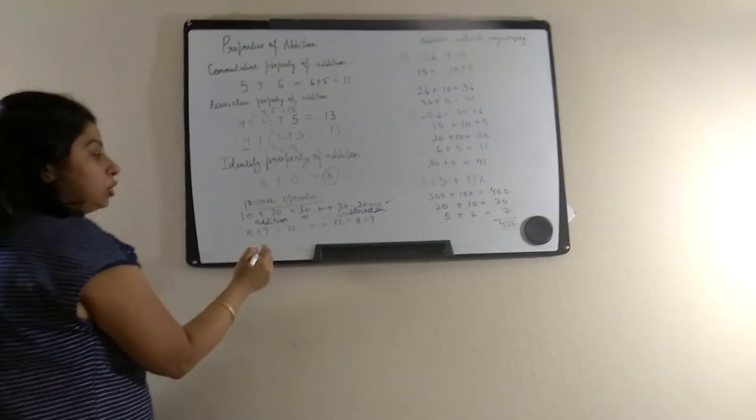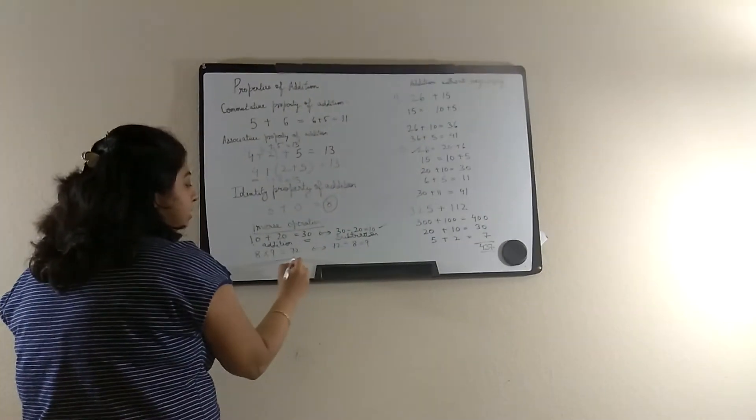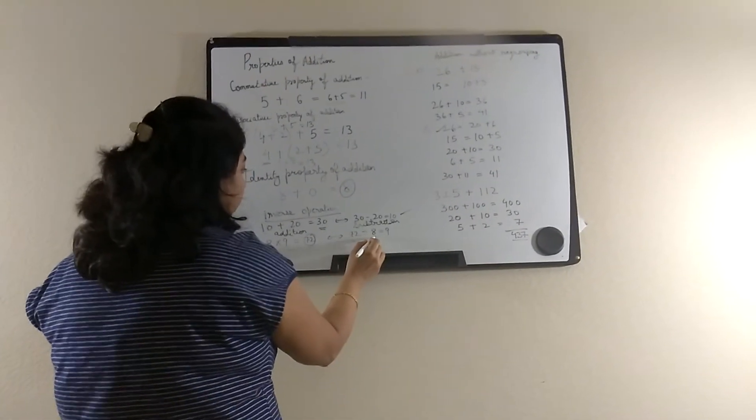Similarly, multiplication and division are inverse operations. 8 times 9 is 72, and when you divide 72 by 8, you will get 9.